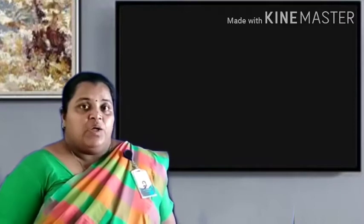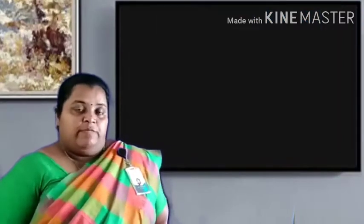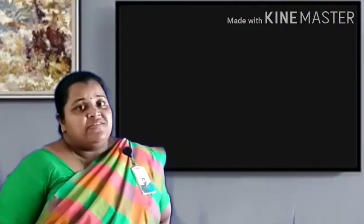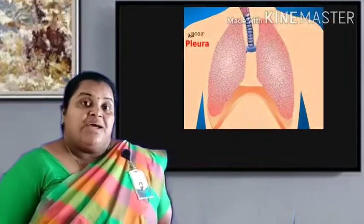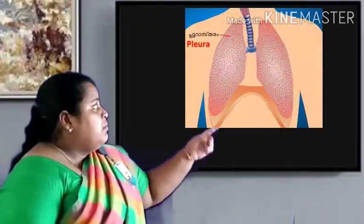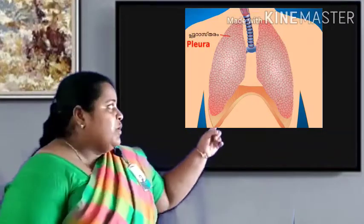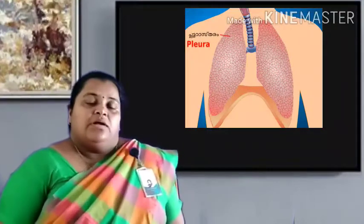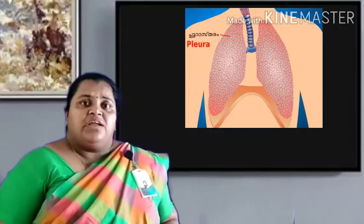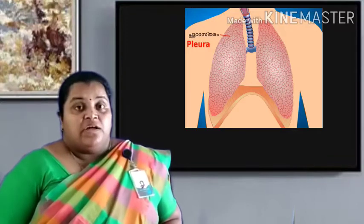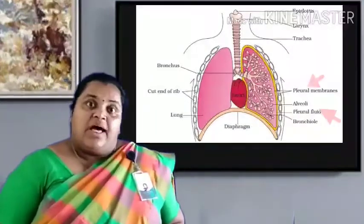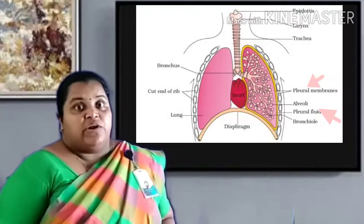Lungs are protected dorsally by the vertebral column, ventrally by the sternum, and laterally by the rib cage. Lungs are covered by a double-layered membrane known as the pleura. The pleural fluid seen in between the membranes reduces the friction between the lungs and the wall of the thoracic cavity.